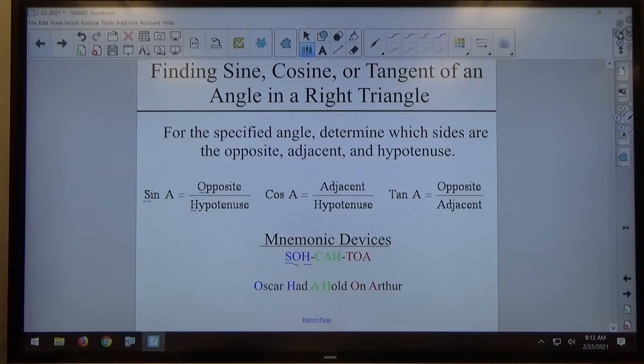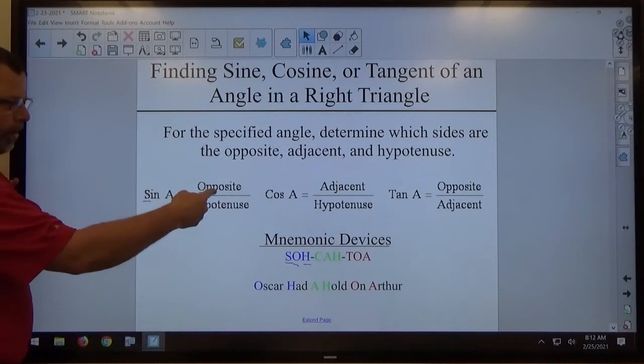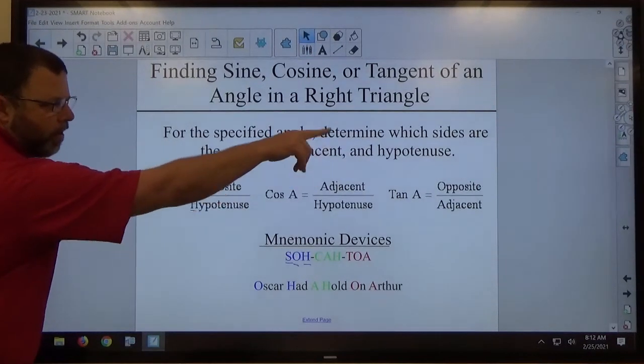Once you have this information under control, right triangle trigonometry is a breeze. It's real simple to deal with. So there are always three parts: there's an angle and two sides, angle two sides, angle two sides.